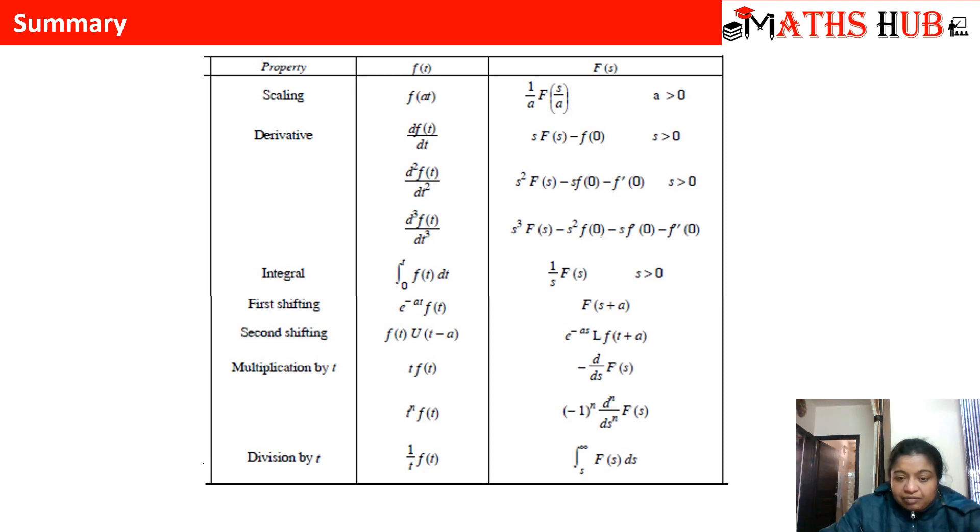whenever along with the function we multiply e raised to power at, then what will happen? The function will get shifted to s plus a. Second shifting property, with the function if we multiply a unit step function, then the result is in the answer we have exponential function e to the power minus as multiplied along with Laplace of f of t plus a.